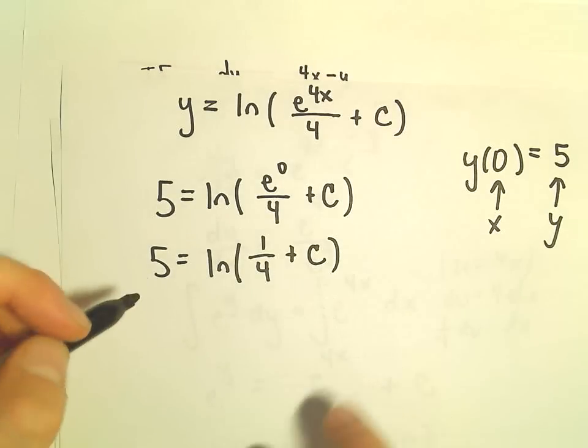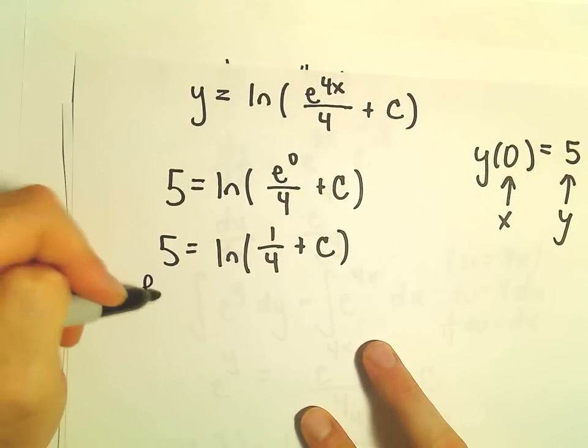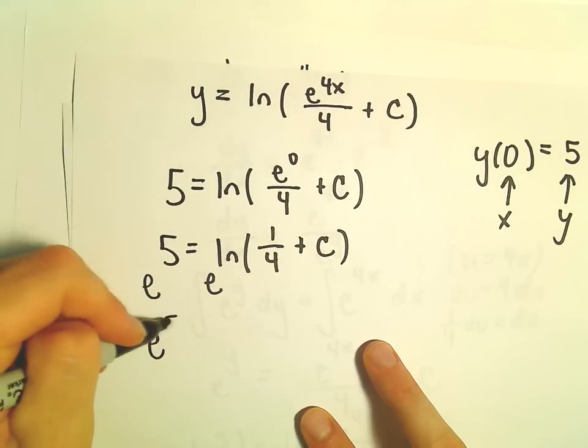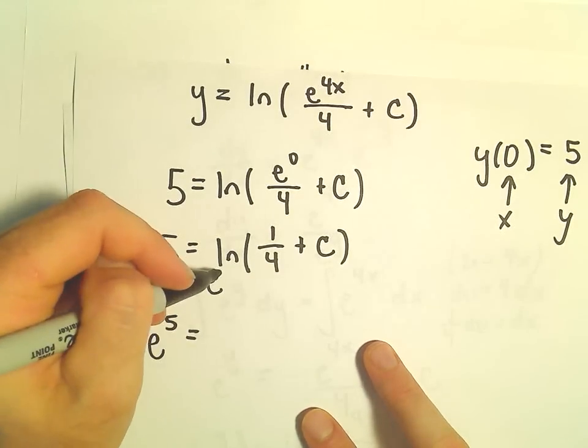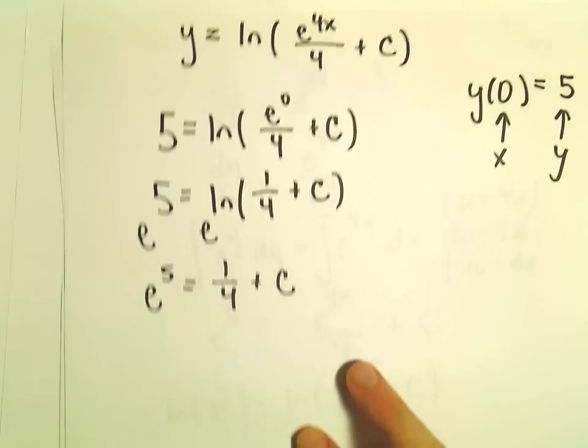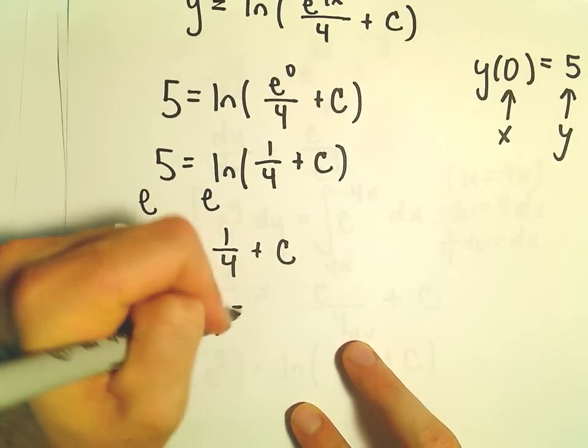To solve for C, we can exponentiate both sides. We'll have e^5 = e^(ln(1/4 + C)). Those cancel, so we have e^5 = 1/4 + C. Our C value is e^5 - 1/4.